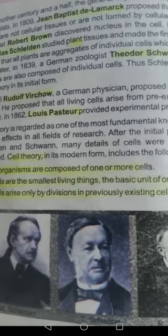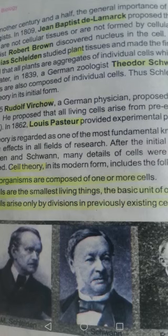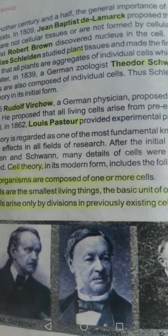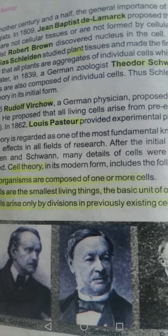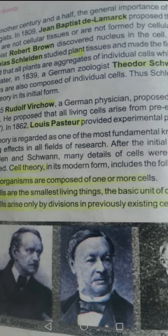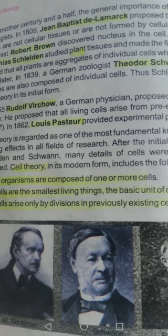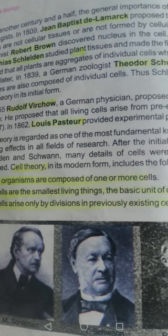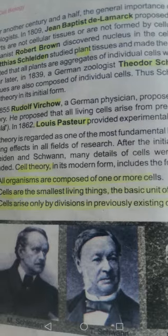The next scientist is Rudolf Virchow, a German physician. He proposed an important postulate of cell theory: that all new cells come from pre-existing cells. He stated that all living cells arise from pre-existing cells, introducing the concept that new cells are formed from previous cells.